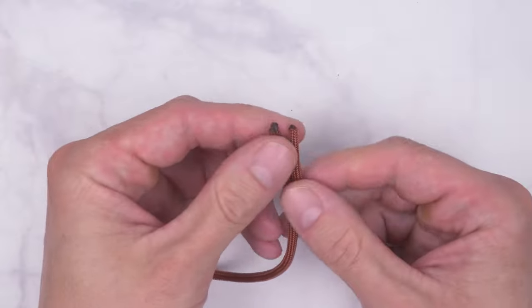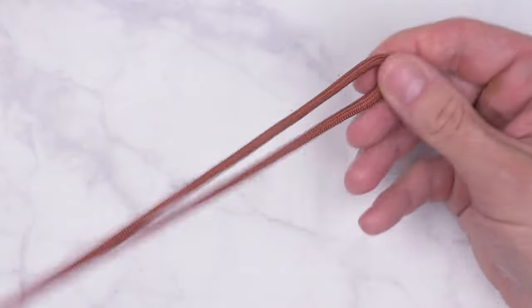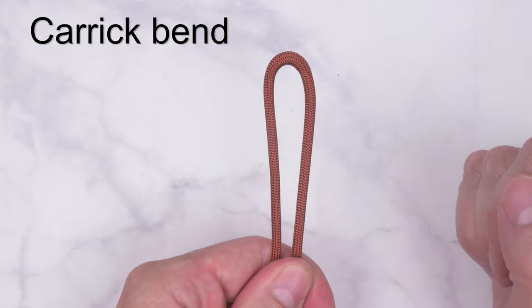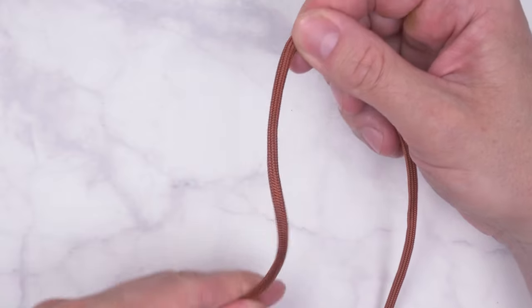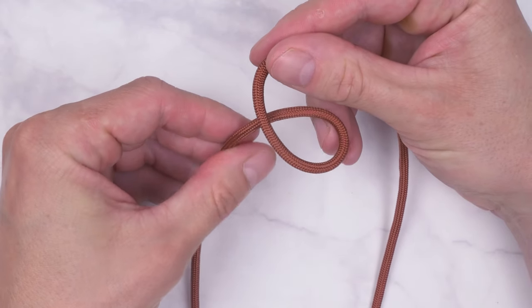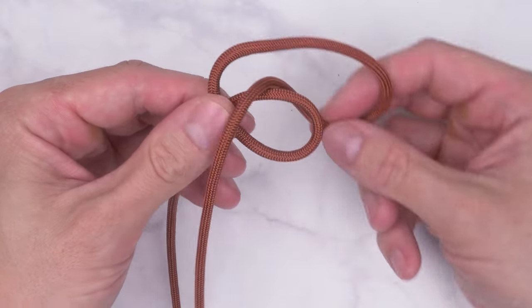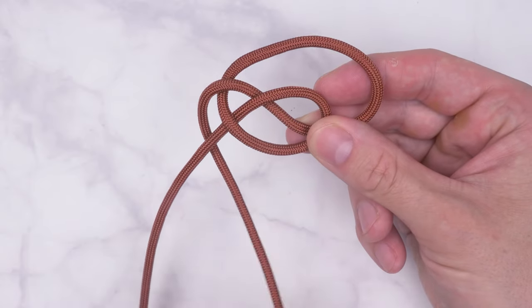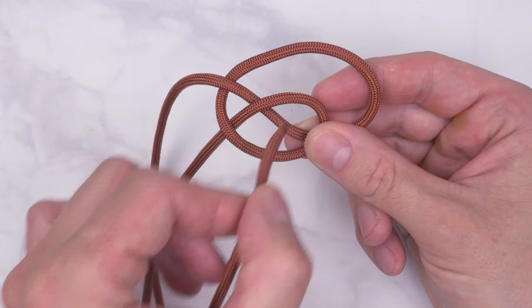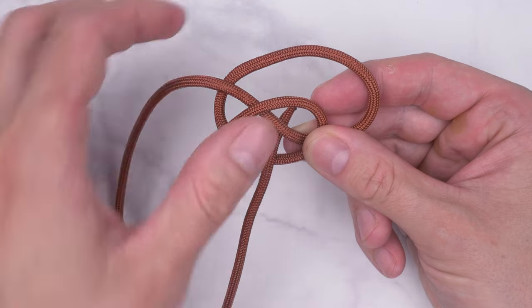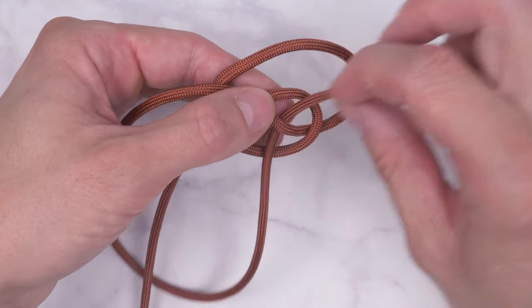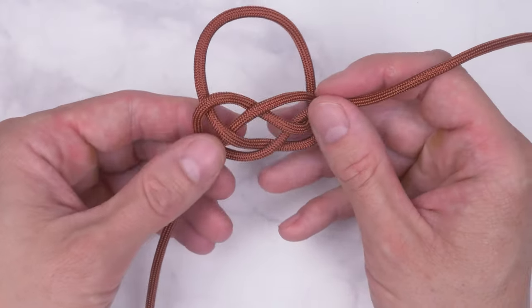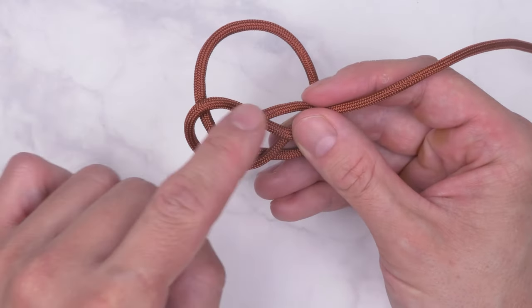We fold our cord in half and tie a carrick bend just under the middle point. So the carrick bend, with a distinct diamond shape at the center.